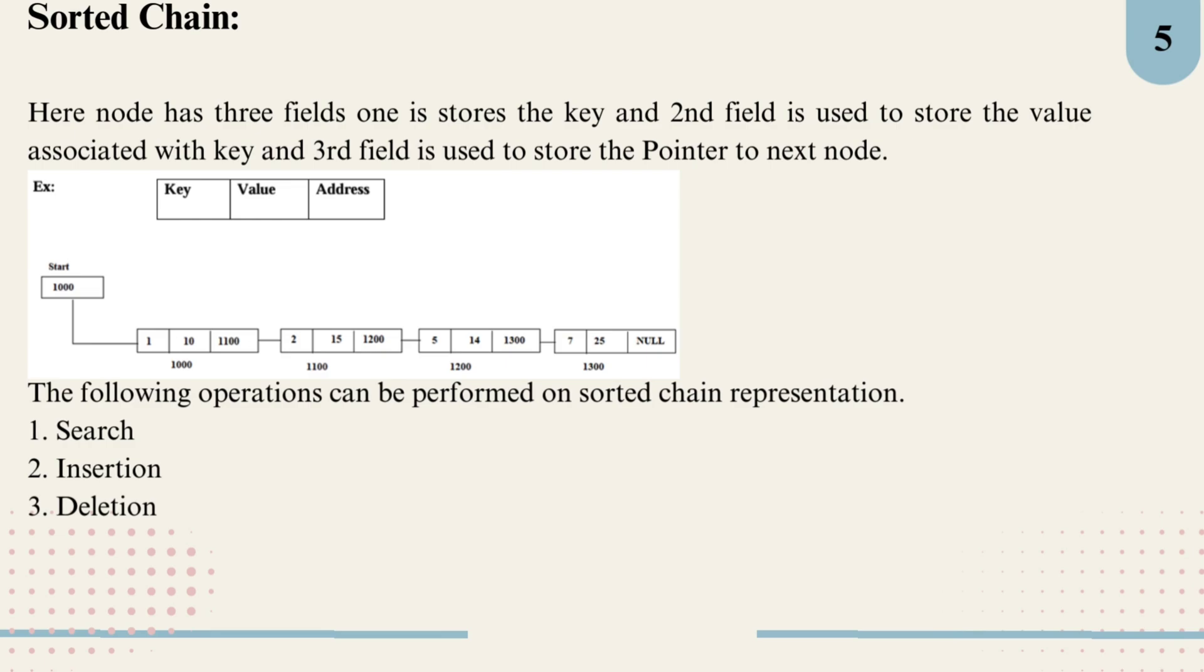Now look at the sorted chain method for representing a dictionary. In this approach, each node in a linked list represents a key-value pair from the dictionary. Each node has three fields: one field for the key, a second field for the value associated with that key, and a third field as a pointer to the next node in the chain.